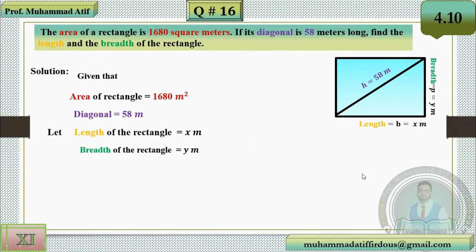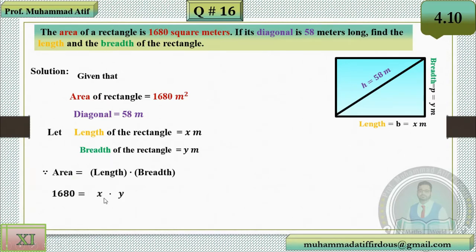Using the formula, the area of a rectangle equals length into breadth. So we have area equal to 1680, length is x, and breadth is y, giving us equation number one: xy = 1680.